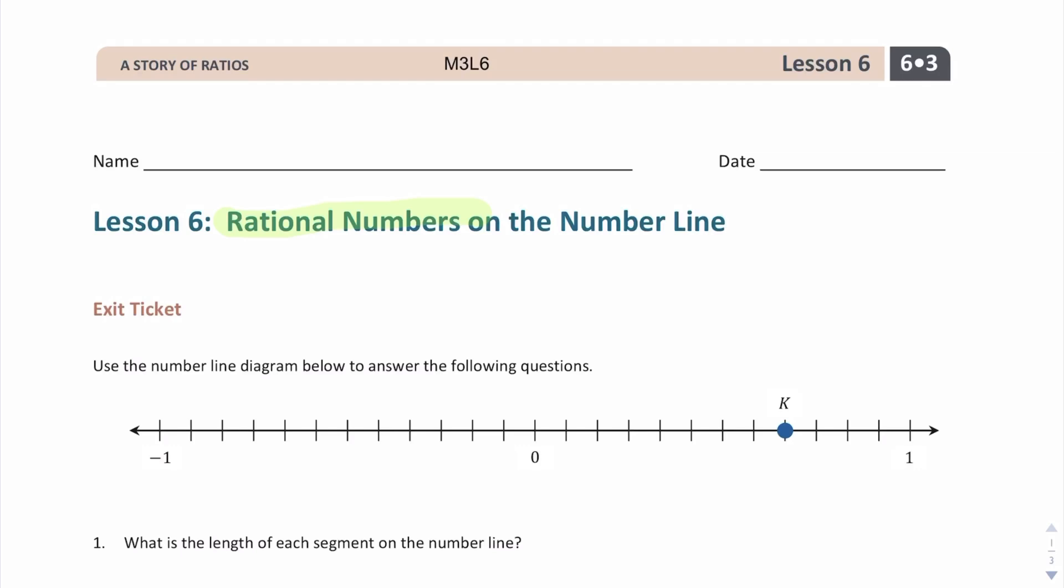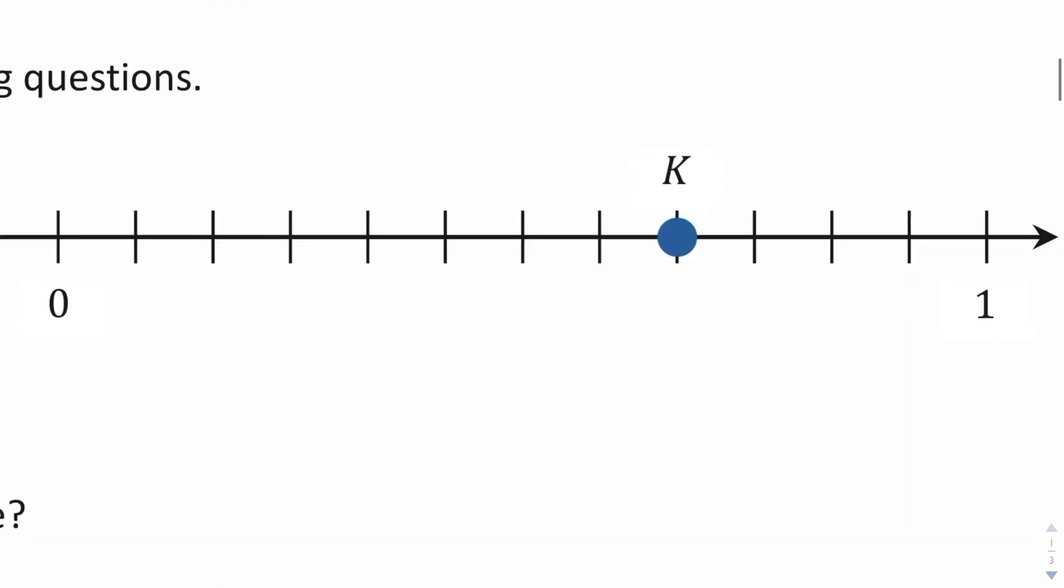First of all, it says use the number line diagram below to answer the following questions. All right, really key thing to notice here is that we have a number line that begins with zero, has quite a few marks in between negative one and zero, and once again, quite a few marks in between zero and one. Really interesting, it's a little bit different than the number lines we've seen before, where you can count by ones, twos, tens, twenties, but this number line is counting by numbers that are smaller than one. Right away, I'm going to go ahead and start numbering this. In order to know what is the interval on this number line, I need to know how many spaces are between zero and one.